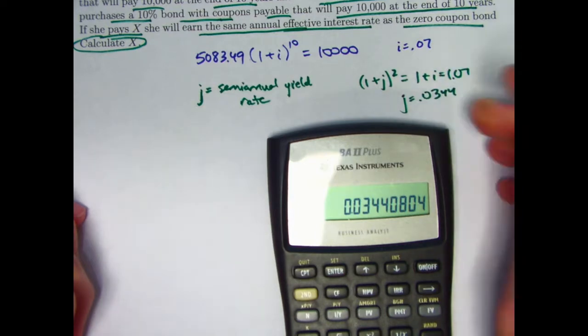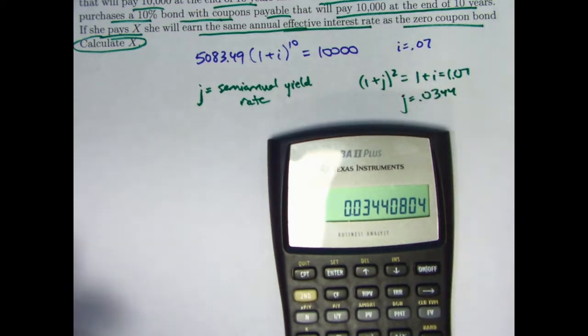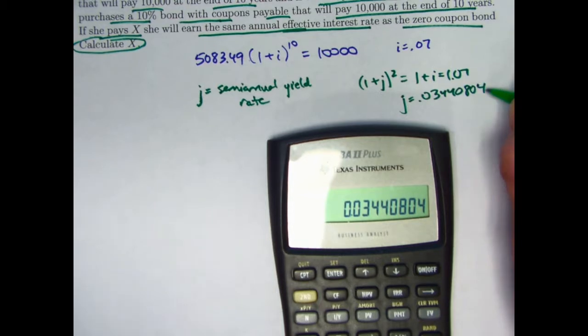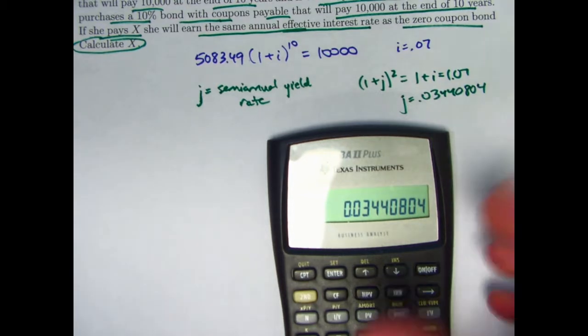The answer key that you can buy online or anywhere you can find it goes ahead and rounds J to this much. I'm going to go ahead and carry more decimals. It does affect the answer by a few dollars to do this.